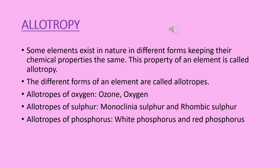What is allotropy? Some elements exist in nature in different forms keeping their chemical properties the same. This property of an element is called allotropy. The different forms of an element are called allotropes.